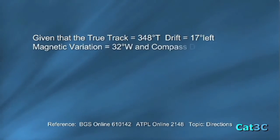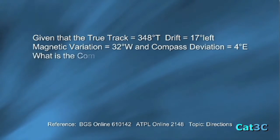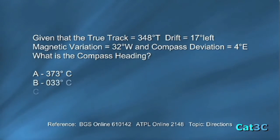Given that the true track is 348 degrees true, drift is 17 degrees left, magnetic variation 32 degrees west, and compass deviation 4 degrees east, what is the compass heading? The options are A, 373 degrees compass, B, 033 degrees compass, C, 007 degrees compass, and D, 359 degrees compass.